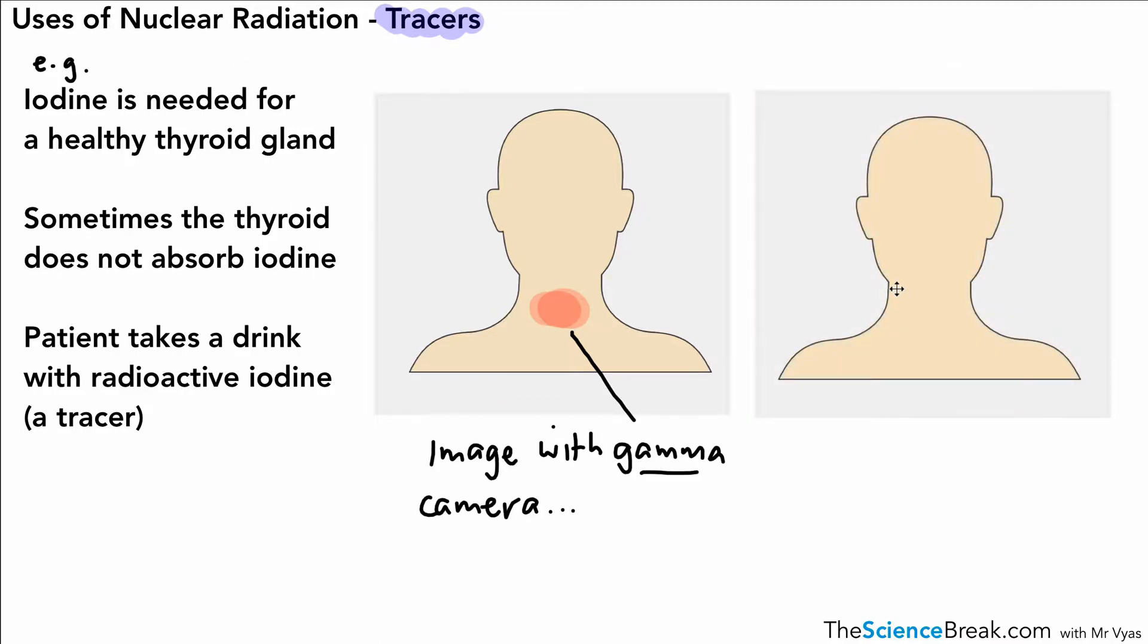Another patient we might see the radioactive iodine has not gathered or accumulated at the thyroid gland, and therefore we can assume there is some issue with the thyroid gland absorbing iodine. This is the patient that we might need to offer some treatment.